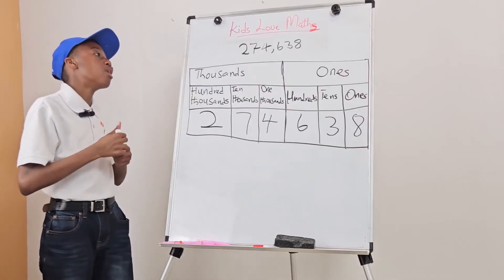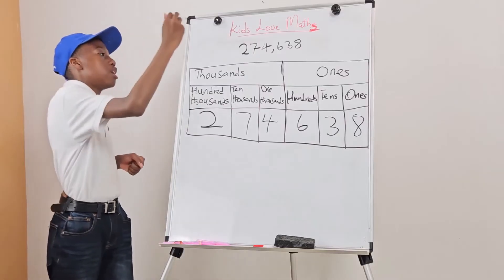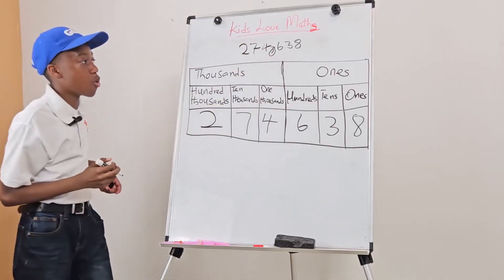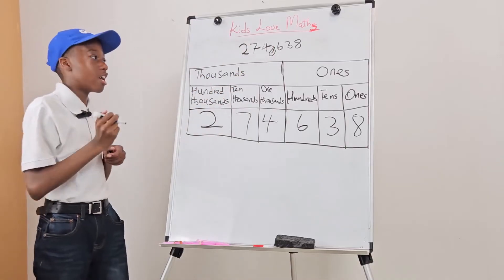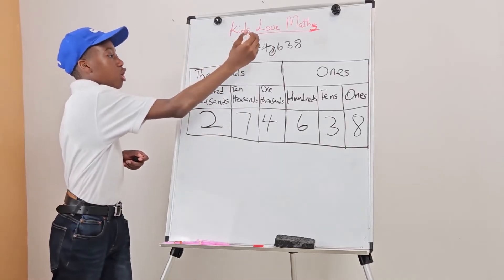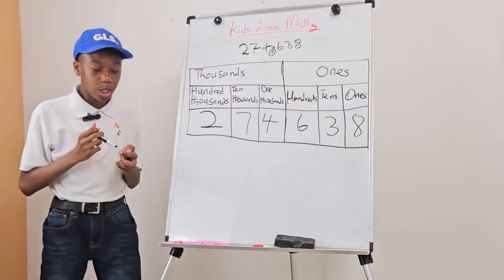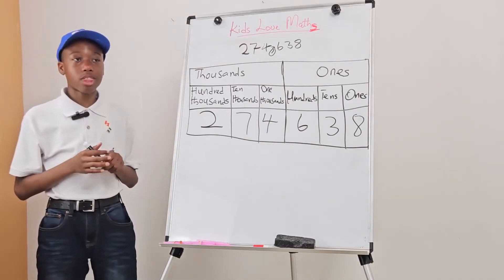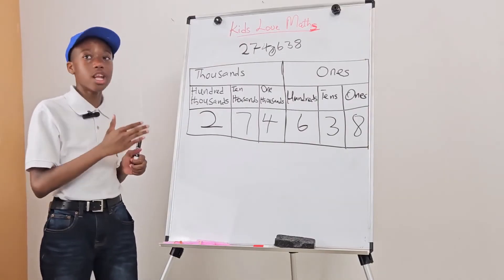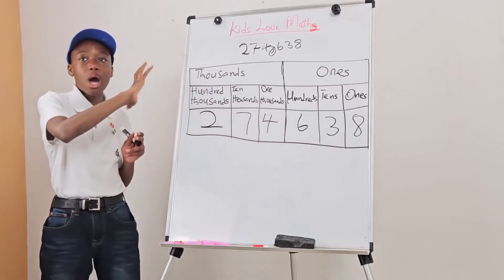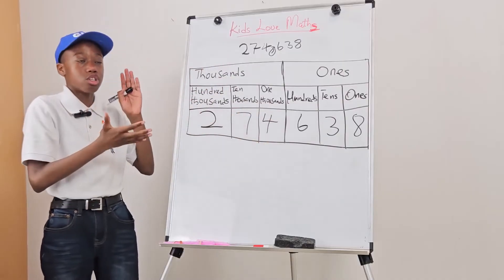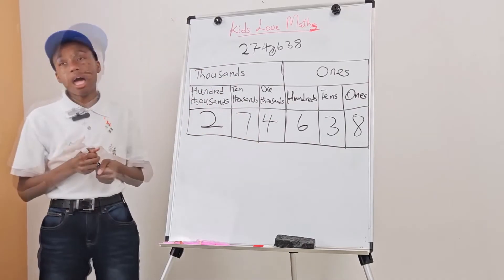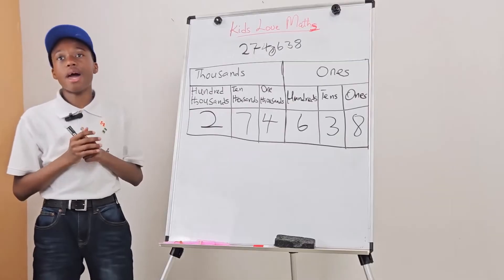As you can see, when I wrote the number 274,638, I put a comma in between. Now that I have laid the foundation with explanation and writing things down to show how place value charts are made and how it helps us, let us do an exercise.